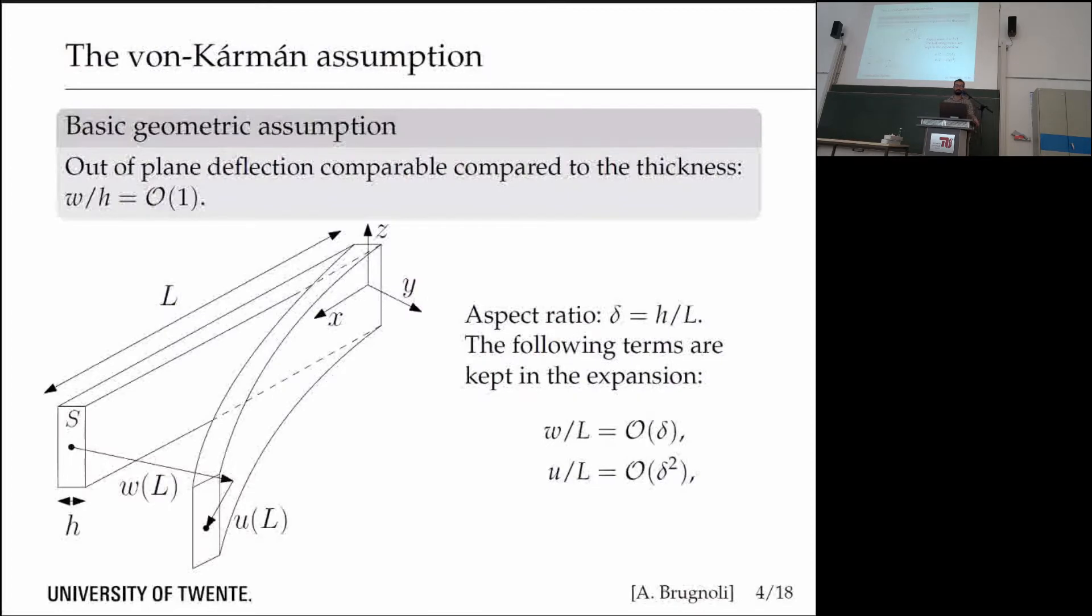The basic idea behind the von Kármán assumption is that the out-of-plane deflection is comparable to the thickness. We have the vertical deflection w compared with the thickness of the beam h, and this is something comparable to 1.